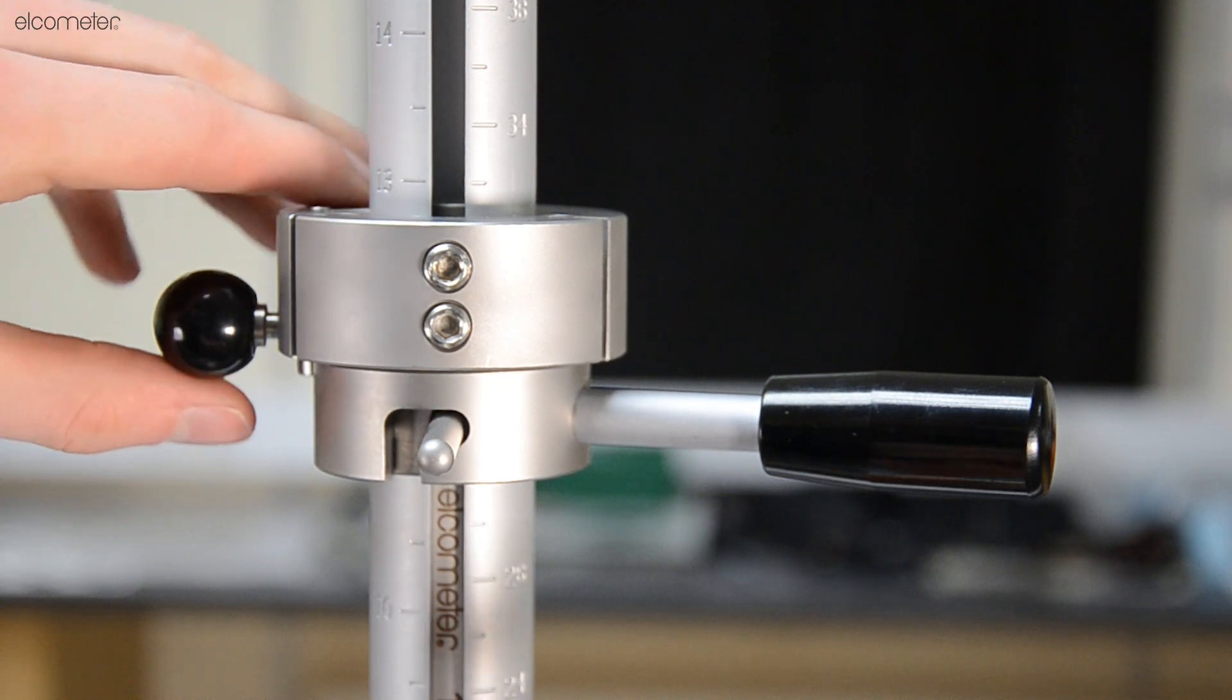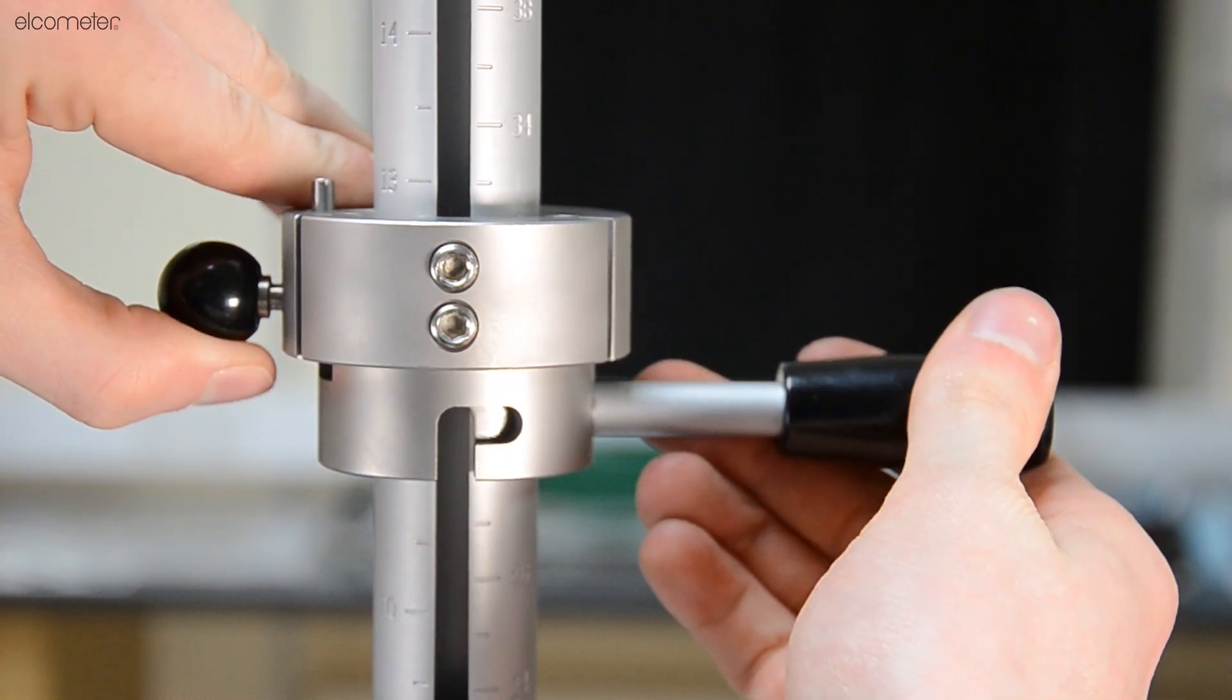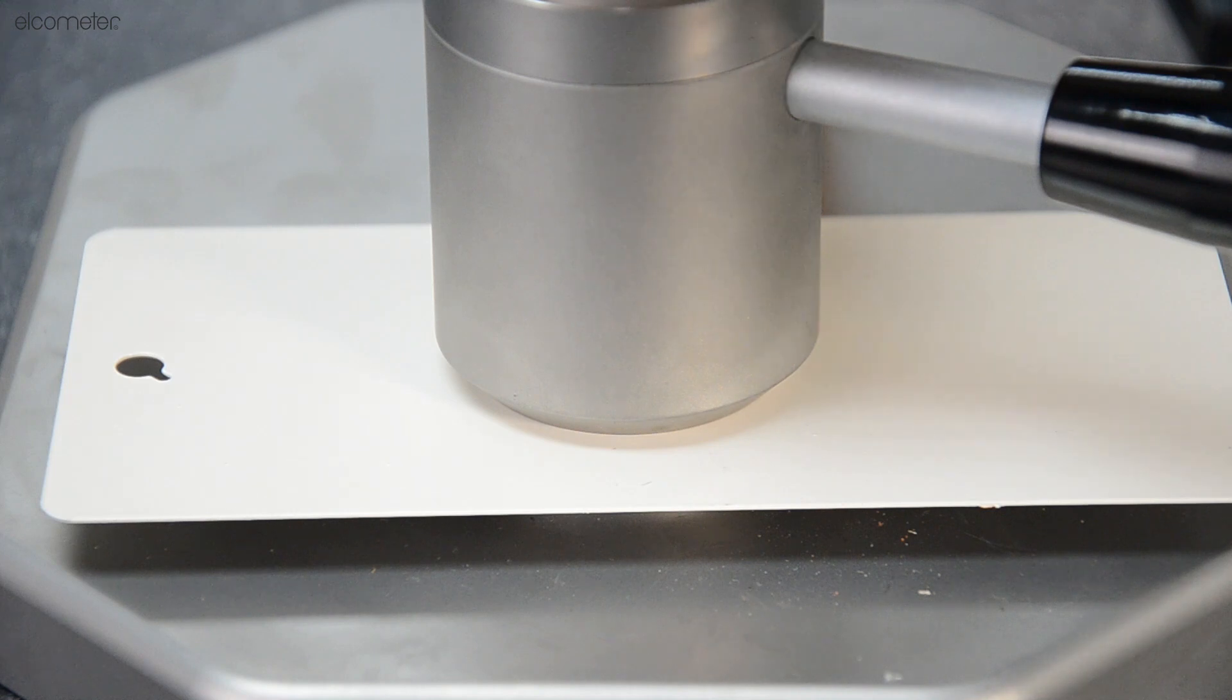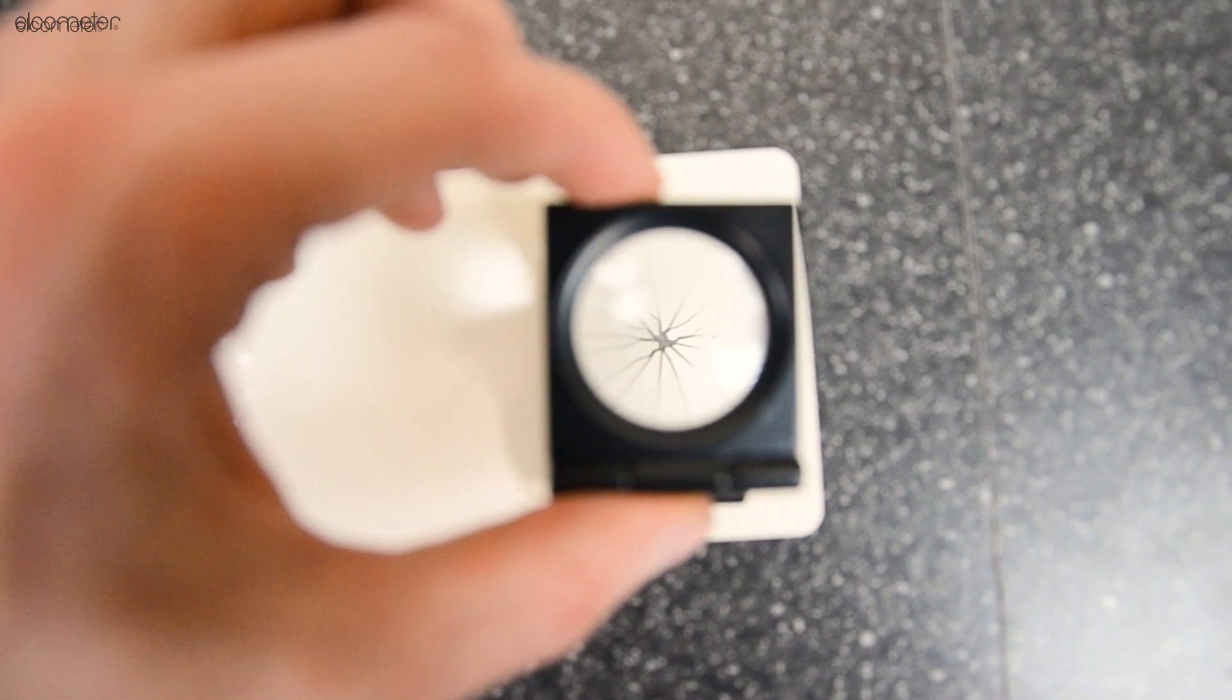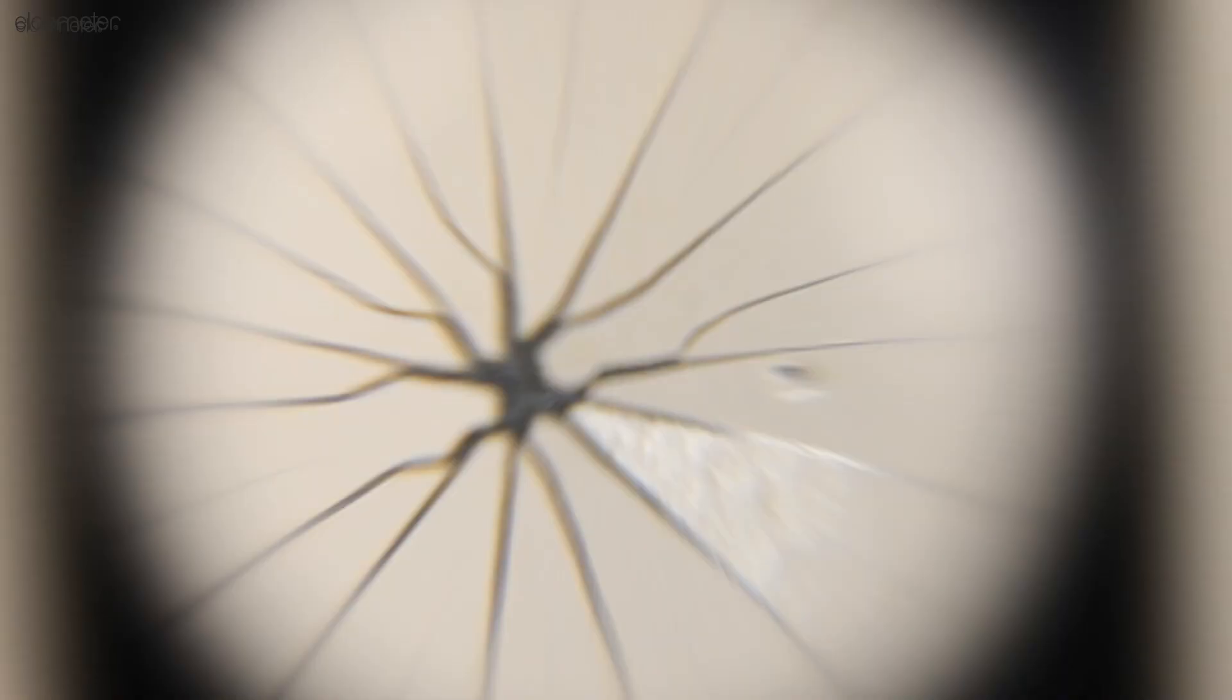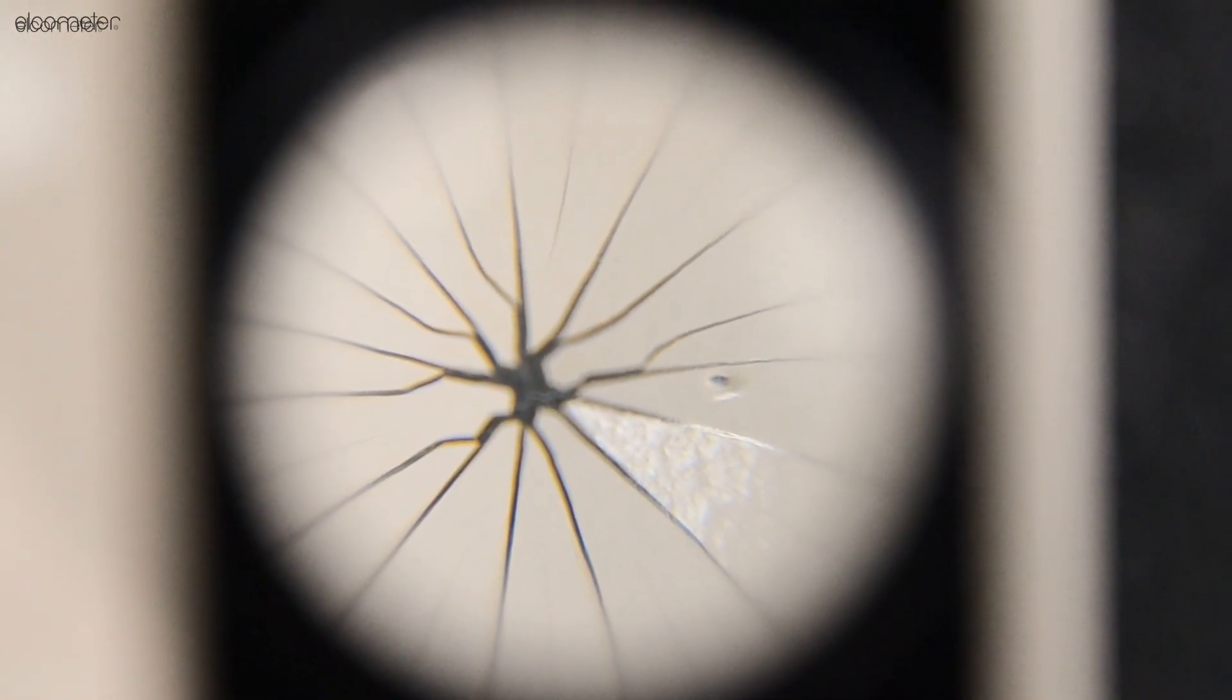An indirect test consists of the weight falling onto a hemispherical punch, which is resting on the sample. The resulting deformation is observed for elongation, cracking and peeling using the included magnifier.